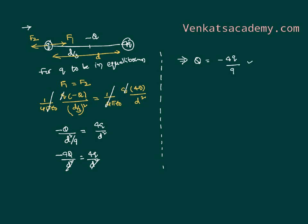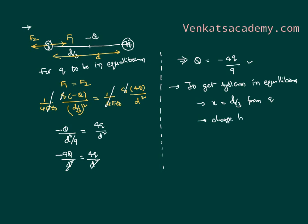So to keep the entire system in equilibrium, we have identified three conditions: the distance has to be d/3 from q; the charge has to be negative; and the charge has to be equal to −4q/9. If all these conditions are satisfied, the entire system goes into equilibrium. Thank you.